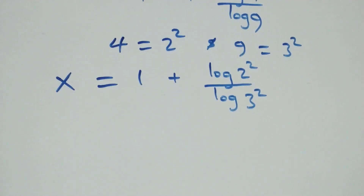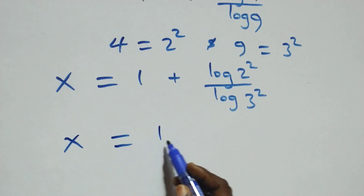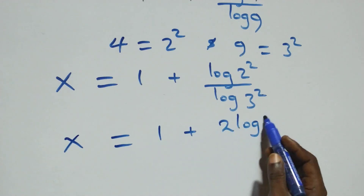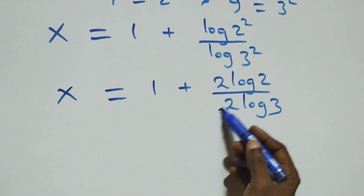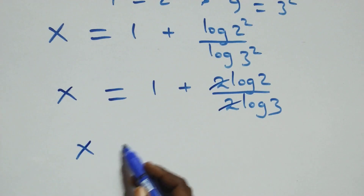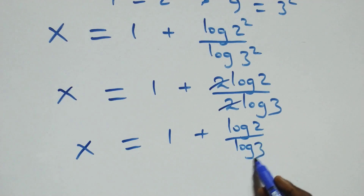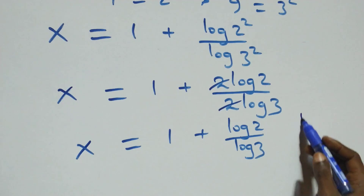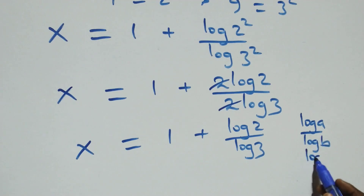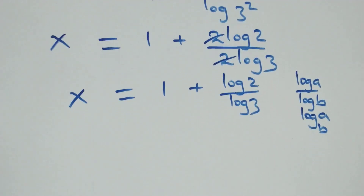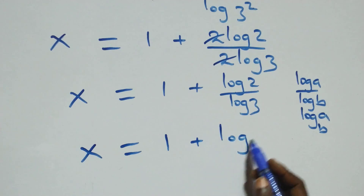Applying the power rule of logarithms, the exponent 2 comes down in both numerator and denominator and cancels, leaving x equals 1 plus log 2 over log 3. Then applying the change-of-base formula — log a over log b equals log base b of a — this becomes x equals 1 plus log₃2.